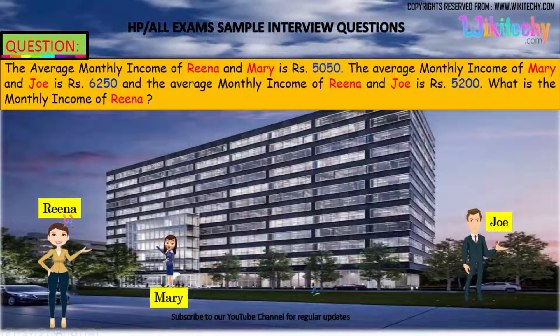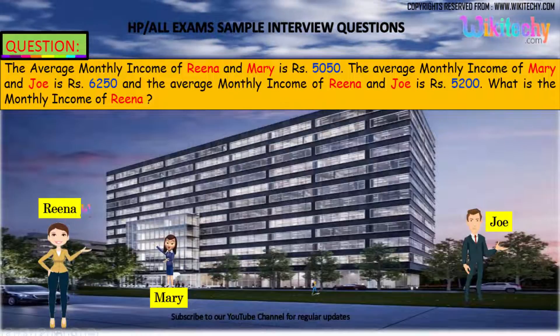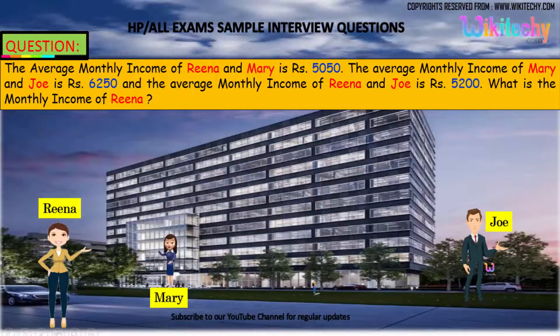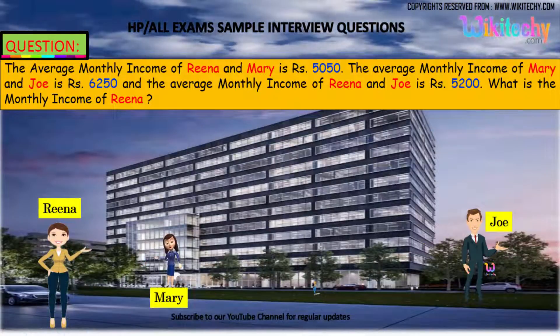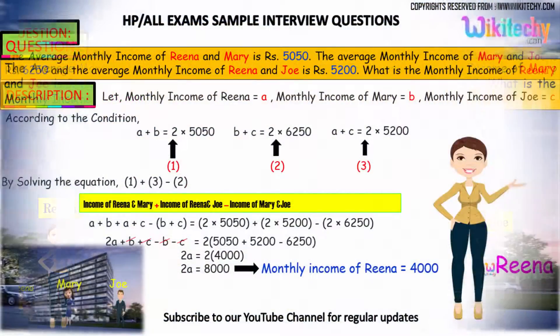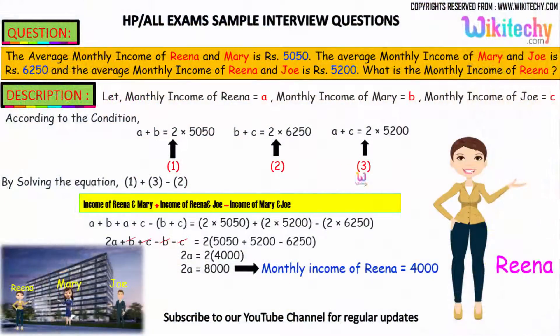That is the question. Let A, B, and C represent the monthly incomes: the monthly income of Reina is A, Mary is B, and Joe is C.